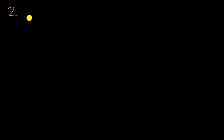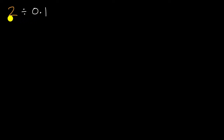Let's say we're trying to figure out what two divided by one tenth is. There are a couple of ways we could approach this. We could think of everything in terms of tenths, since we're dividing by one tenth. So instead of two ones, we could rewrite that two as the same thing as 20 tenths.